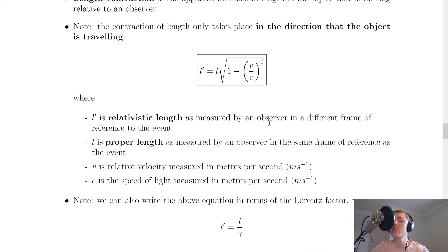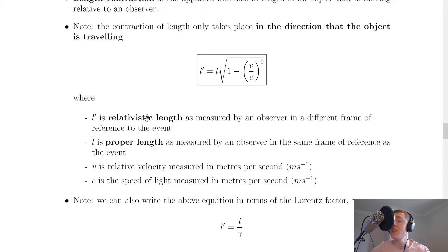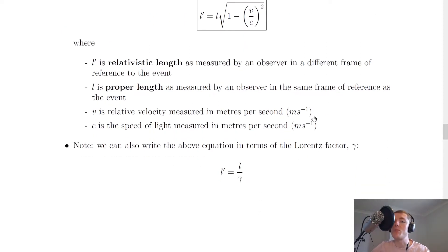The equation looks quite similar to the one for time dilation. L' is equal to L times the square root of 1 minus V over C squared, where L' is the relativistic length as measured by an observer in a different frame of reference to the event — so if you're not near the event, you would measure the relativistic length, which would appear smaller than the proper length. L is the proper length as measured by an observer in the same frame of reference as the event, so if you're next to the object you would measure its proper length. V is the relative velocity measured in meters per second, and C is the speed of light measured in meters per second, just like we had in the time dilation equation.